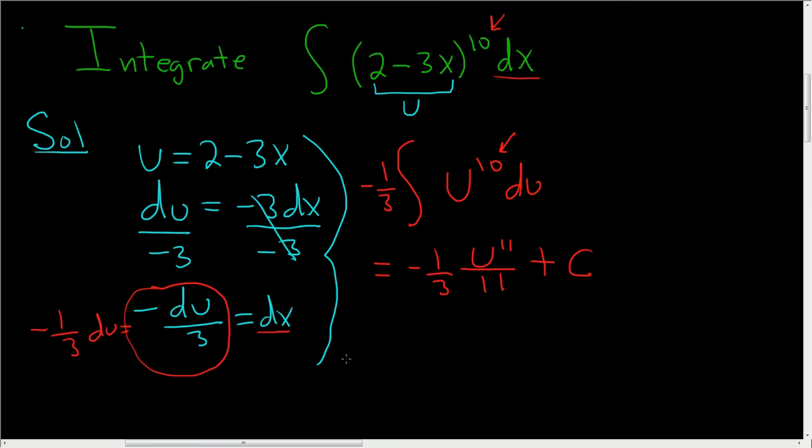And so the final answer is, let's see, 3 times 11 is 33. So negative 1 over 33. And then u is 2 minus 3x.